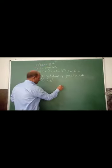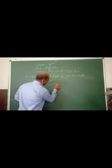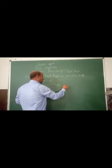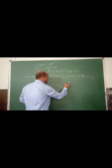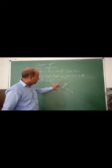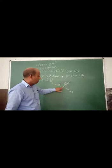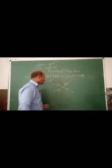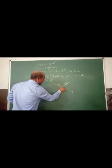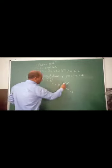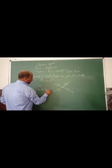Suppose we have a junction where currents are coming in. I1 and I2 are entering the junction, and I3 and I4 are leaving the junction. According to this rule, the sum of currents entering the junction — I1 plus I2 — must be equal to the sum of currents leaving the junction — I3 plus I4.